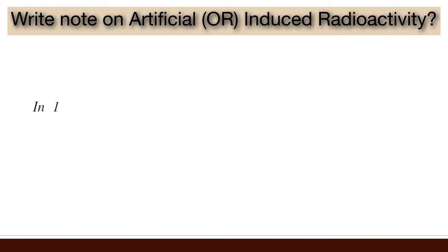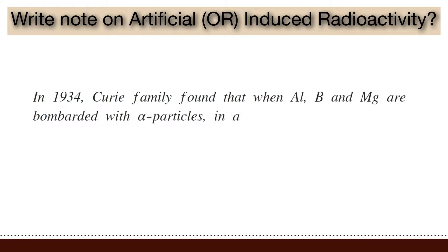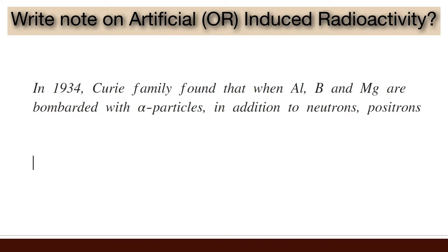In 1934, Curie family found that when aluminium, boron or magnesium are bombarded with alpha particles, in addition to neutrons, positrons are also emitted.